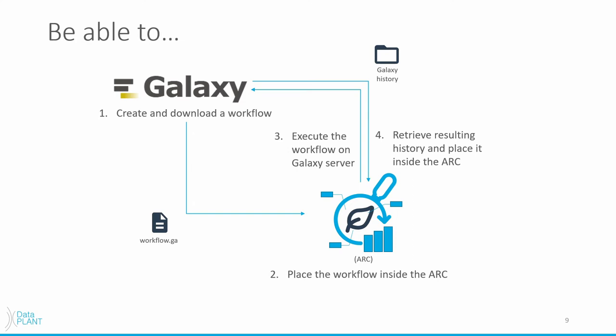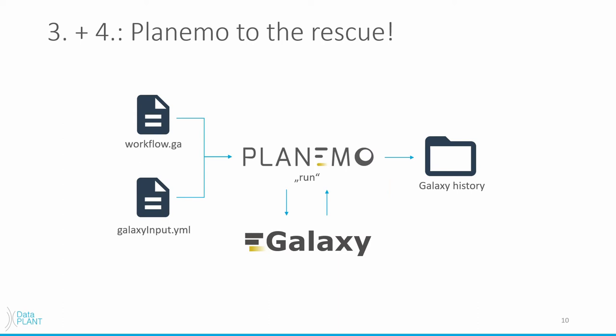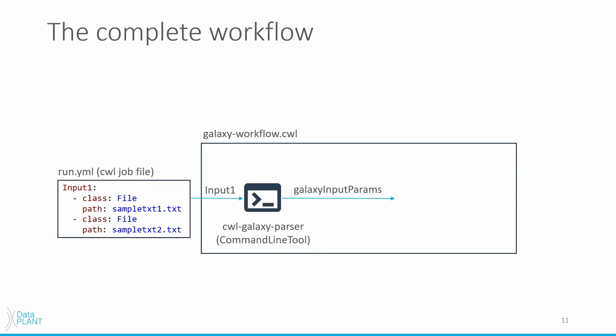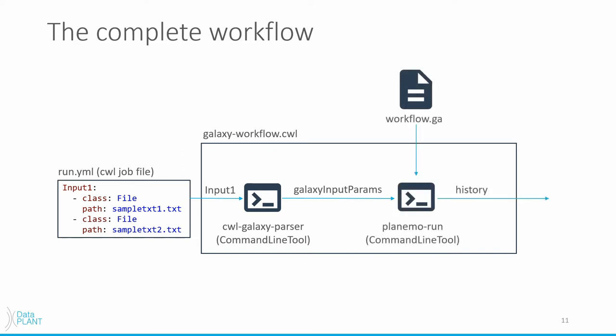Now let's take a look at steps three and four. We want to be able to execute the workflow on the Galaxy server and retrieve the results. And because we want to use CWL to facilitate this, we need a command line tool that handles the interaction with Galaxy. And to our luck, there is a tool named planemo that does exactly that. Planemo is maintained by the Galaxy project and has a command called run, which takes the workflow.ga file as well as a yaml file containing the inputs to the workflow. It then tells Galaxy to run the workflow and returns the results when the server is done. So to make the Galaxy workflow executable, we created a two-step CWL workflow. For step one, we created a command line tool called the CWL Galaxy parser, which takes the inputs from our CWL job file and writes them into a yaml file that planemo run can understand. In step two, we invoke planemo run with the input parameter file from step one and our workflow.ga file, which has to be located in the same folder as the Galaxy workflow.cwl file. Planemo run then executes the Galaxy workflow and returns the history when it's done.